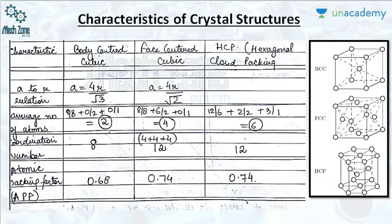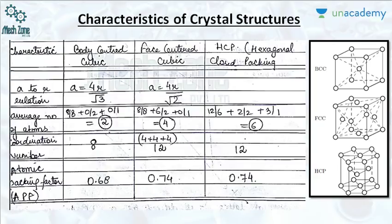This is a very important slide. We have characteristics in one column for body centered cubic, face centered cubic, and hexagonal closed packing, comparing all three crystal structures with respect to their A-to-R relation. For simple cubic: A = 2R. For body centered cubic: A = 4R/√3. For face centered cubic: A = 4R/√2. We also compare them with respect to the coordination number and atomic packing factor.